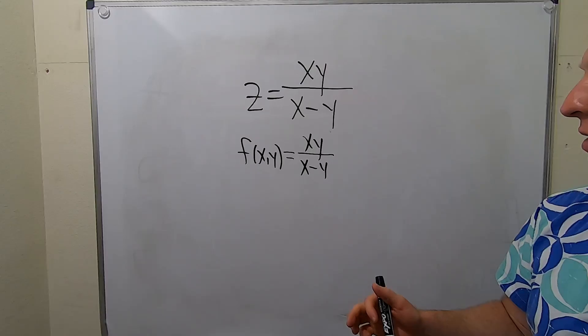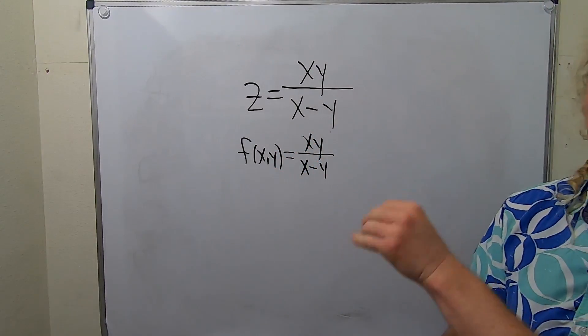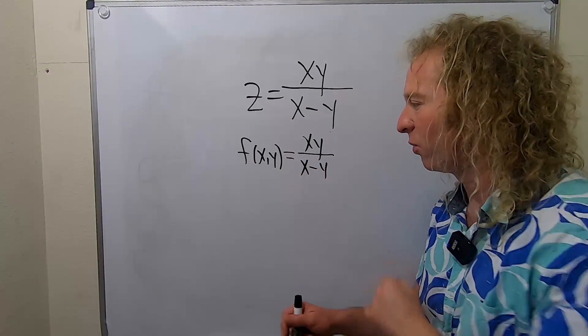So the domain is a set of ordered pairs, and we simply have to look at this and think, where does this make sense? Well, this will make sense as long as the bottom is not 0. In other words, as long as x is not equal to y.